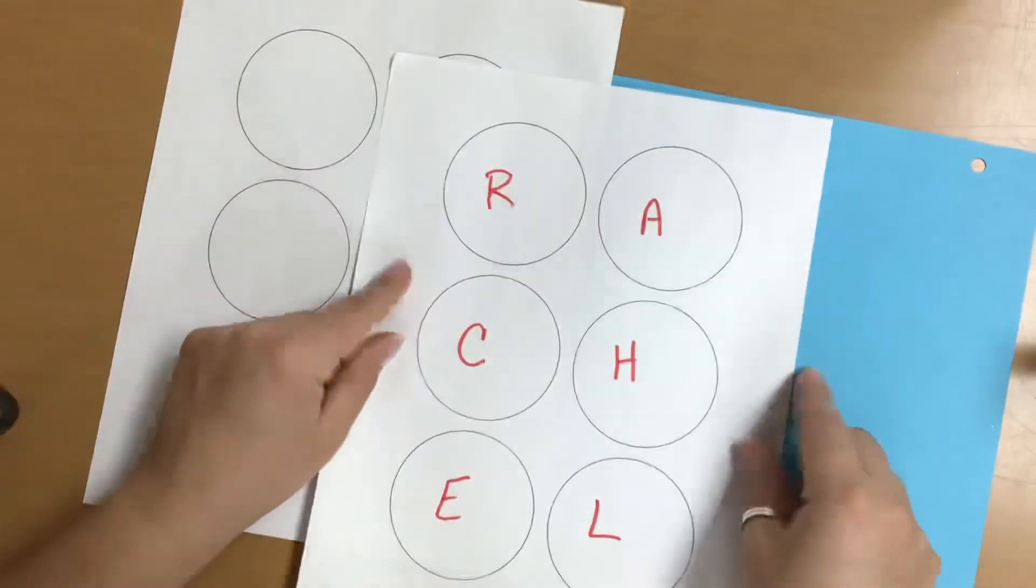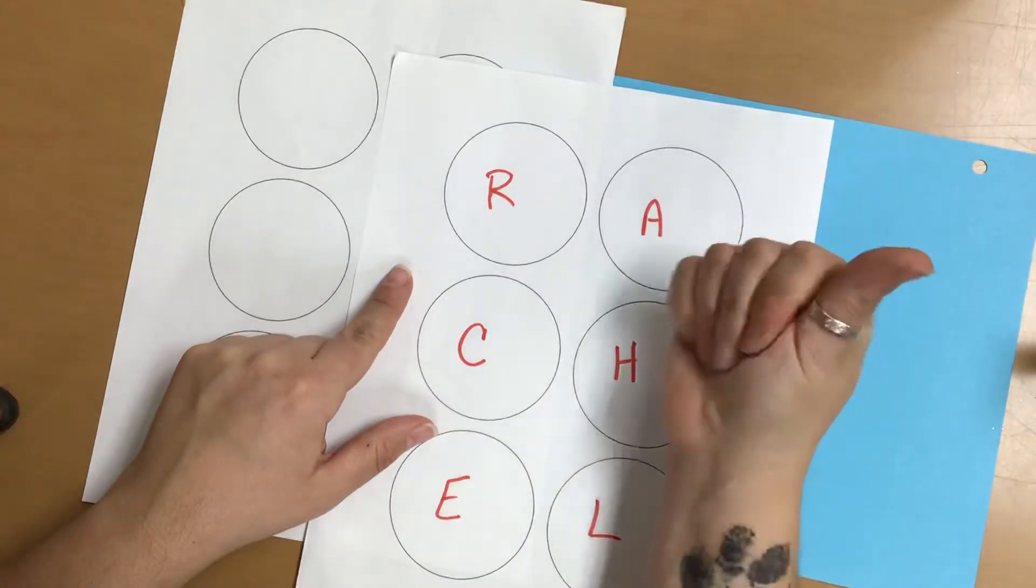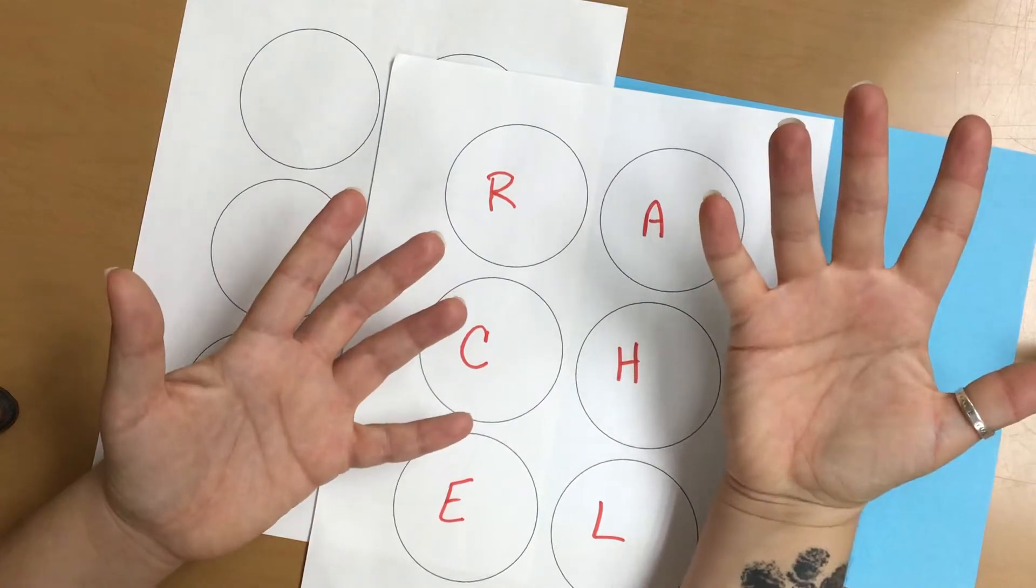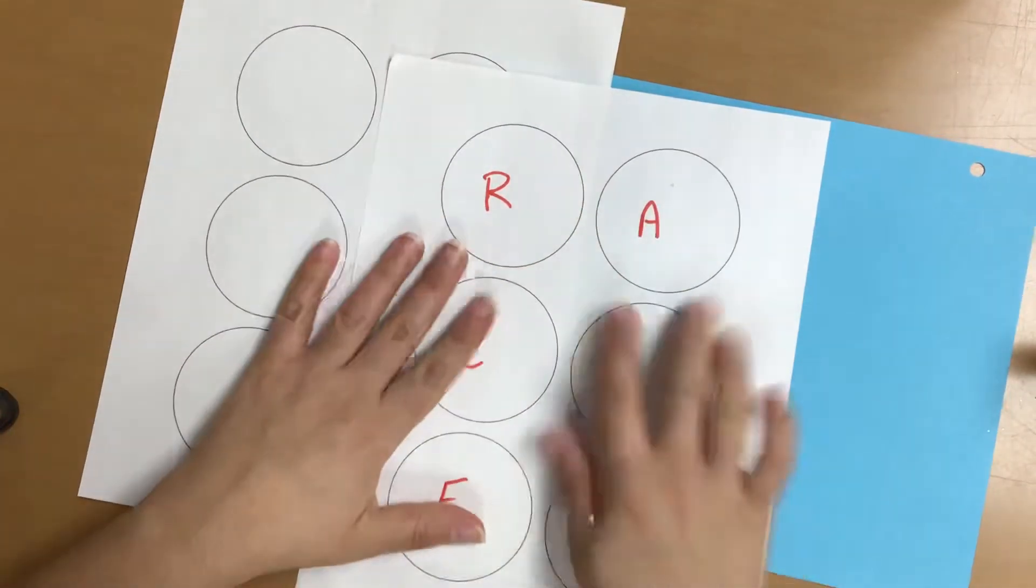If you look at the letters I have, I have the letters R-A-C-H-E-L. That's R-A-C-H-E-L. Does anybody know what that is? That is my name. Yeah, that's my name. It says Rachel.